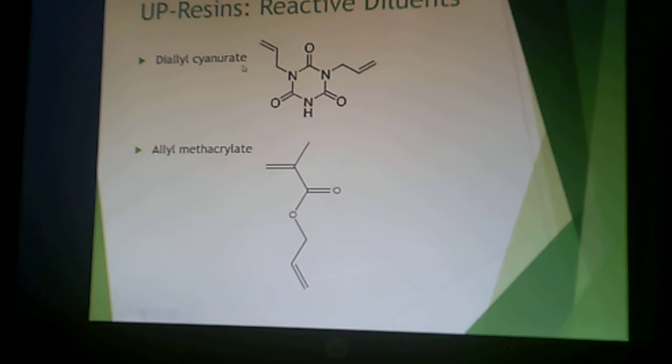Diallyl cyanurate and allyl methacrylate are additional reactive diluents with a lot of unsaturation. This concludes the first unsaturated polyester resins lecture. You'll have a short quiz after this, and then you can proceed to the second unsaturated polyester resins lecture.